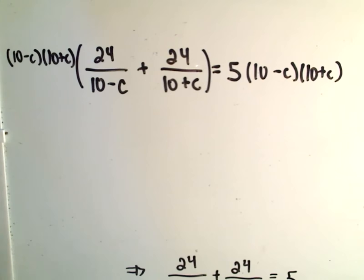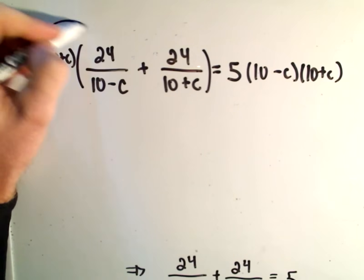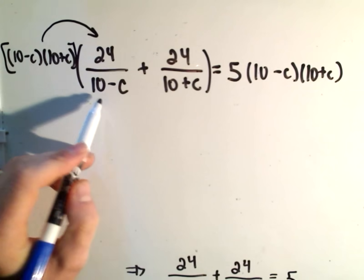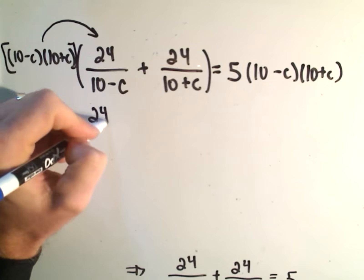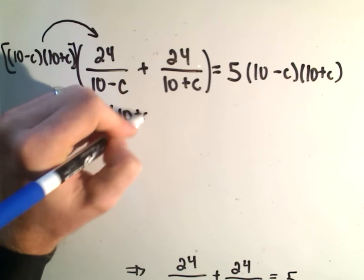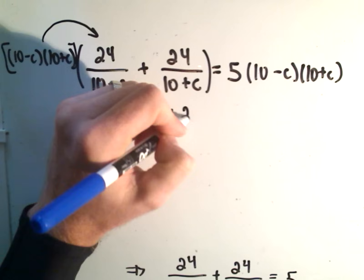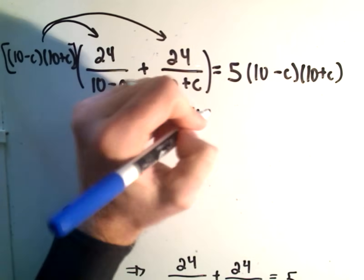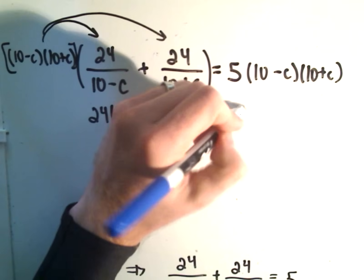Okay, so, when I distribute this to the first part, I'm distributing this whole first term. The 10 minus C will cancel out and leave us with 24 times 10 plus C plus 24. When I distribute it to the second part, the 10 plus C will cancel out and that'll leave me with 10 minus C.